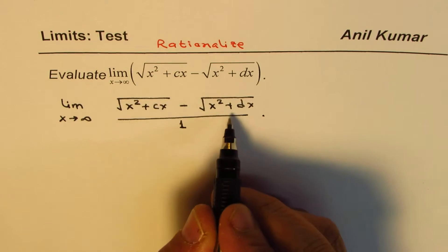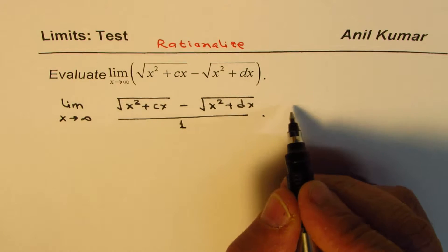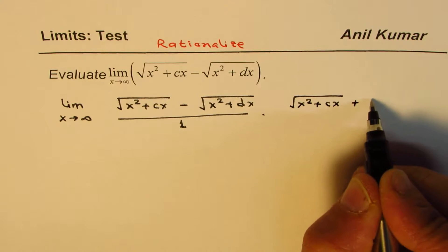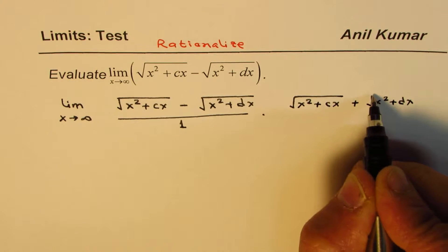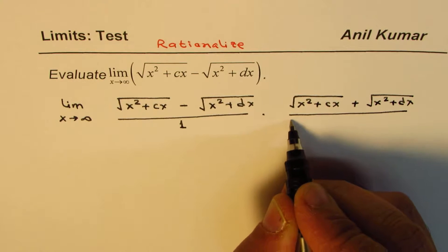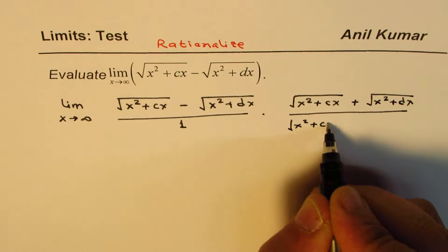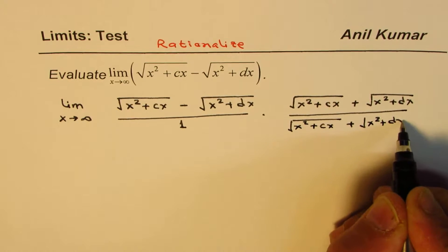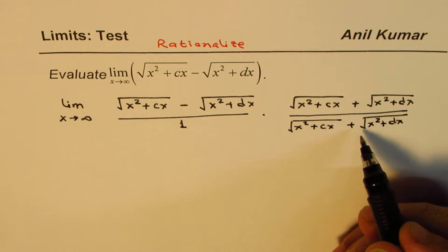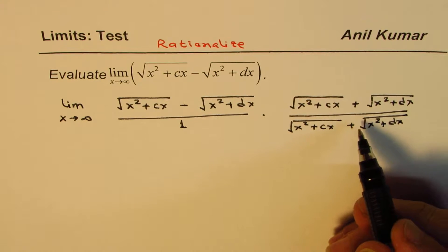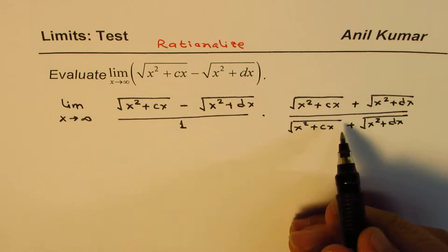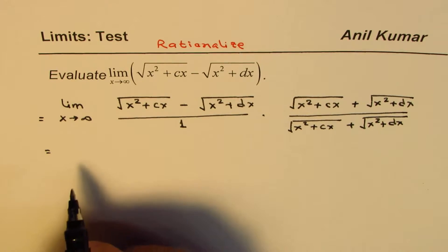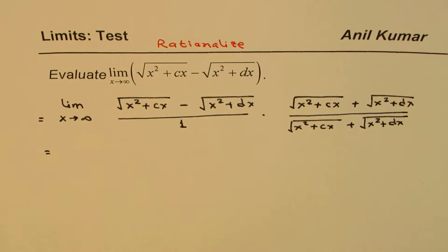To rationalize, multiply and divide by the conjugate of the numerator. That will give x squared plus cx plus x squared plus dx in the numerator, divided by the square root of x squared plus cx plus the square root of x squared plus dx. Since you're multiplying and dividing by the same factor, you're effectively multiplying by 1, so it is the limit of the given question.